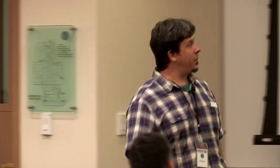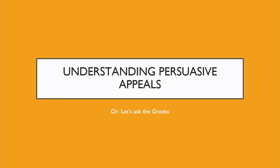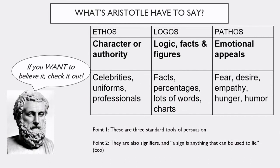So let's talk about persuasive appeals—this is where misinformation comes from. Going back to Aristotle: he laid out three main routes to persuasion—ethos, pathos, logos—and they hold pretty well today. These are standard routes, and because they're signs of persuasion, any one of them can be used to lie. If you've ever seen a Star Wars movie: put on a Stormtrooper uniform, and people stop paying attention because you're using the sign 'I'm with the Empire' to sneak in.